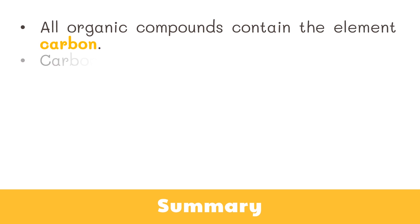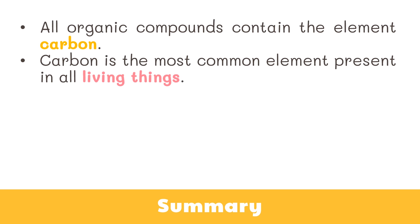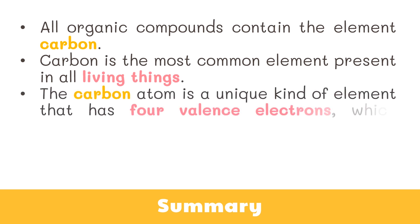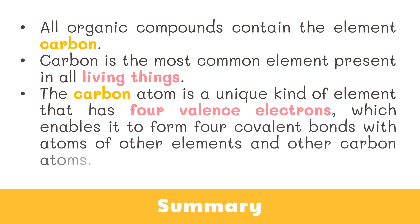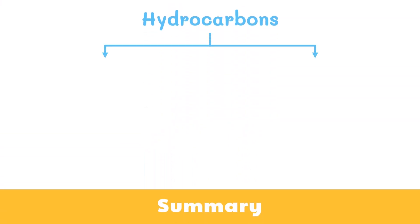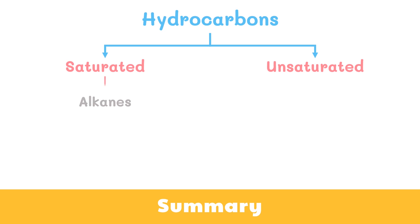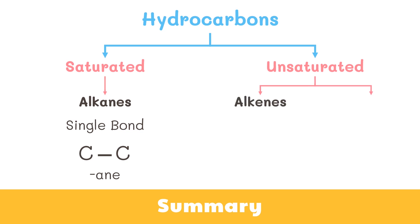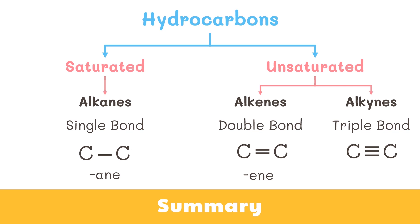Now let's wrap things up. All organic compounds contain the element carbon. Carbon is the most common element present in all living things. The carbon atom is a unique kind of element that has four valence electrons, which enables it to form four covalent bonds with atoms of other elements and other carbon atoms. There are two types of hydrocarbons: saturated and unsaturated. Saturated hydrocarbons are called alkanes, contain only a single bond, and have the suffix "-ane". Unsaturated hydrocarbons are further classified into alkenes and alkynes. Alkenes contain one or more double bonds and have the suffix "-ene". Lastly, alkynes contain one or more triple bonds and have the suffix "-ine".